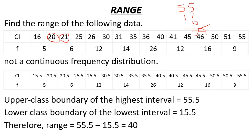We take the highest observation and the lowest observation — the maximum and minimum values — to find the range. We need to identify the highest value and lowest value from the table. We find the upper limit and lower limit, and the range is the difference between the highest and lowest value.